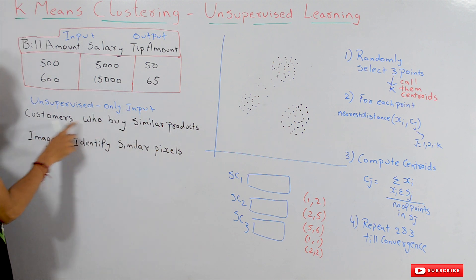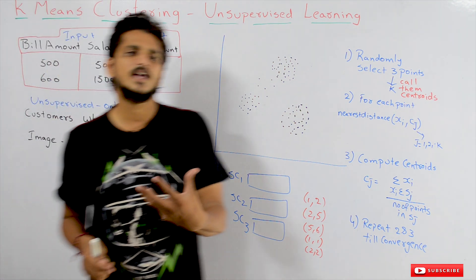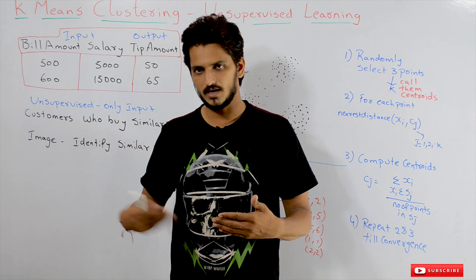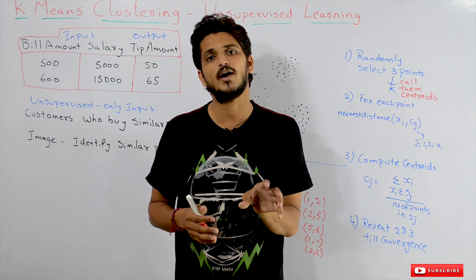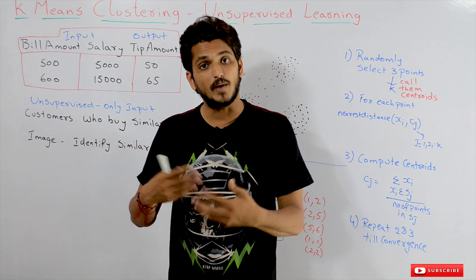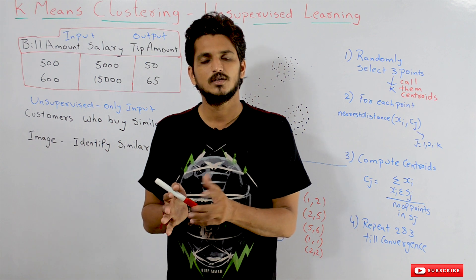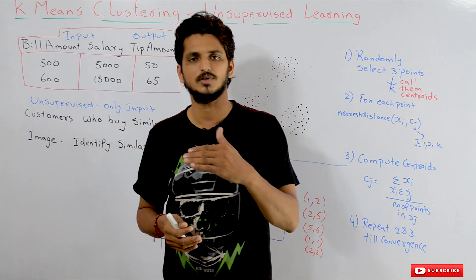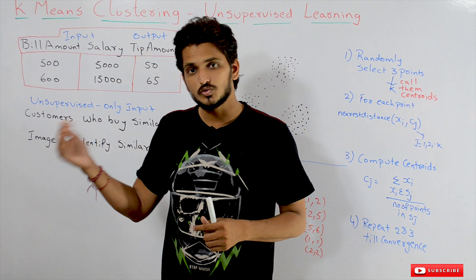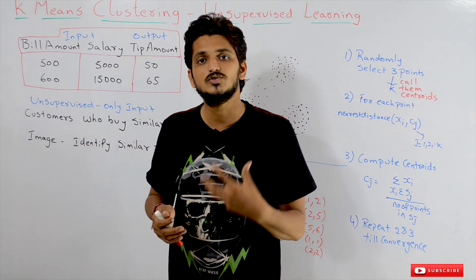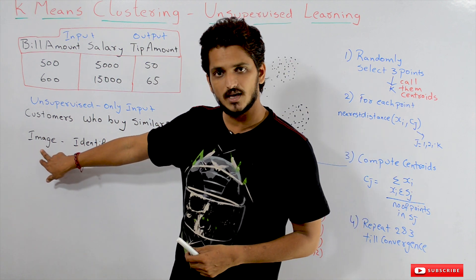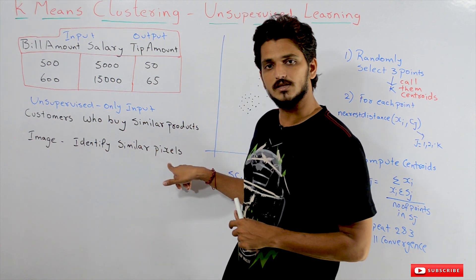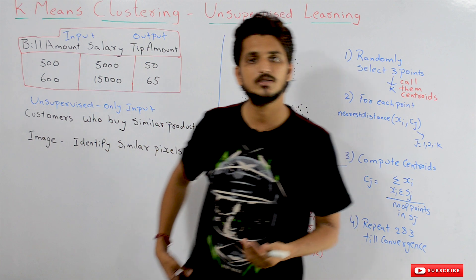Let's take an example. Consider a supermarket where customers come in and buy products. If someone asks you to identify the customers that are buying the same products, we have only input — the list of products bought by each customer. There is no output to supervise this. This is unsupervised learning. Another example: if you take a picture of an elephant, identifying similar pixels in the image is also an unsupervised machine learning problem.